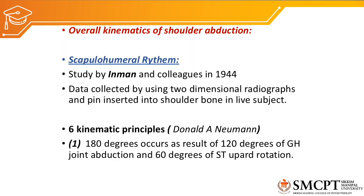Now let's summarize this scapulohumeral rhythm. The scapulohumeral rhythm — the overall kinematics of shoulder abduction — was first studied by Inman and colleagues in 1944. The data was collected using two-dimensional radiographs and pins inserted into the shoulder bones in live subjects. They found that the overall 180 degrees of abduction was not only achieved by the glenohumeral joint but also by contributions from the other three joints — the scapulothoracic joint, acromioclavicular joint and sternoclavicular joint. This can be summarized into six kinematic principles.